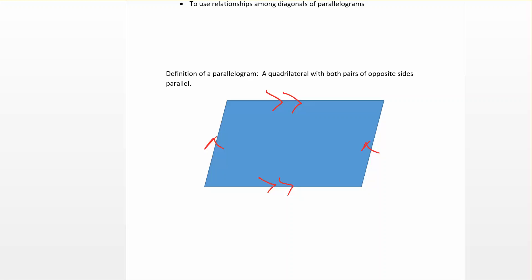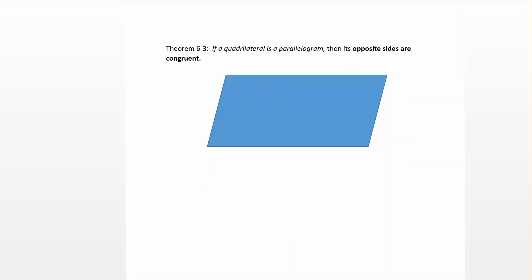Now that we have our definition, let's look at some properties that parallelograms have. Theorem 6-3 says: if a quadrilateral is a parallelogram, then its opposite sides are congruent. Our given is that we have a parallelogram — we're not trying to decide if it is, we know that it is. So opposite sides are congruent. If this side were 13, then its opposite side would also be 13. If the bottom side were 21, then the top would be 21.